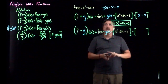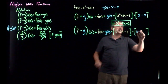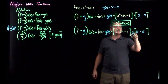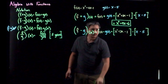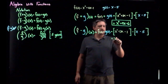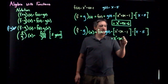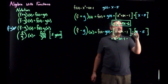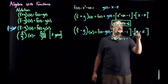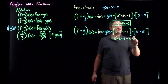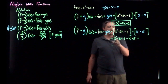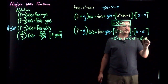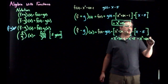Now I do have a negative to distribute. Distributing the negative into X minus 5 gives minus X plus 5. So I end up with X squared plus 3x minus 1 minus X plus 5. Combining like terms: X squared plus 3x minus X is plus 2x, and minus 1 plus 5 is plus 4. Final answer: X squared plus 2x plus 4.